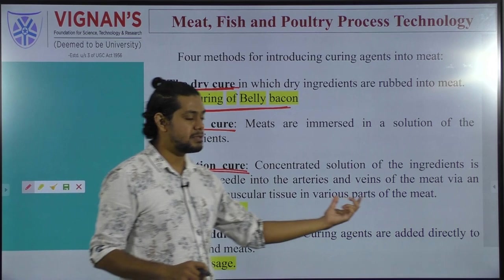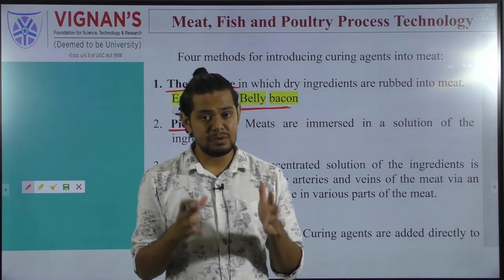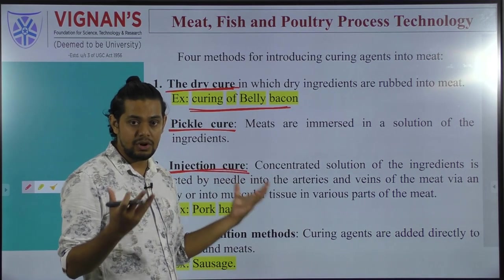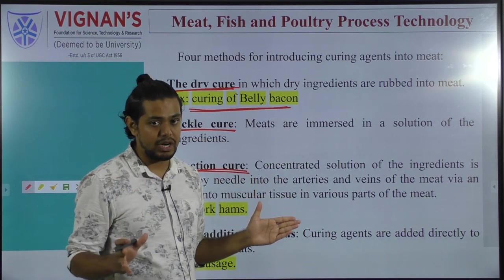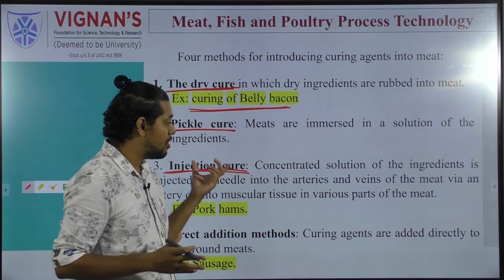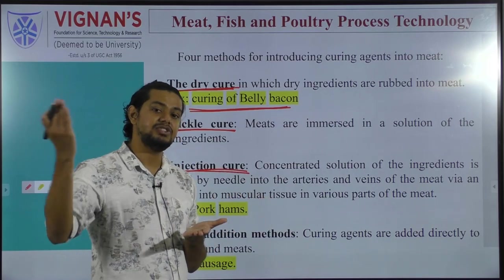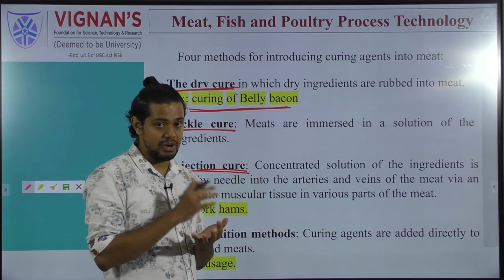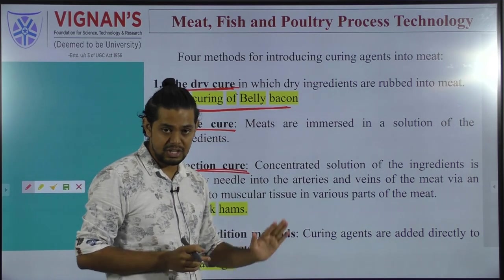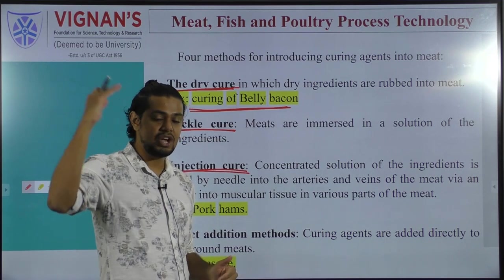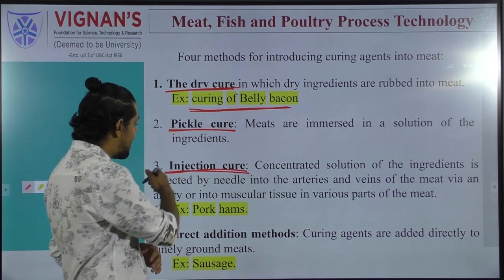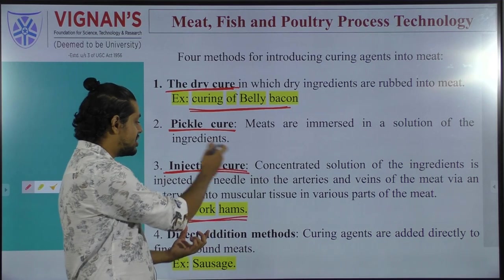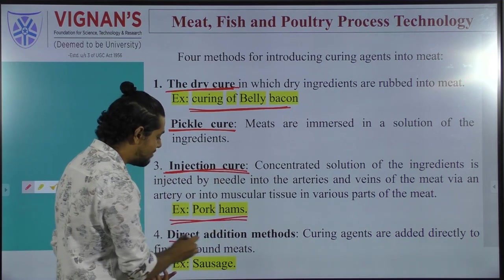In injection curing, the salt solution must reach all parts of the carcass through the arteries and veins. This increases the shelf life of the product because the available moisture content is reduced by the hypertonic salt concentration. Pork hams available commercially are subjected to injection curing. The fourth method is direct addition, where the curing agent — salt — is added directly to finely ground meat, with sausages as an example.